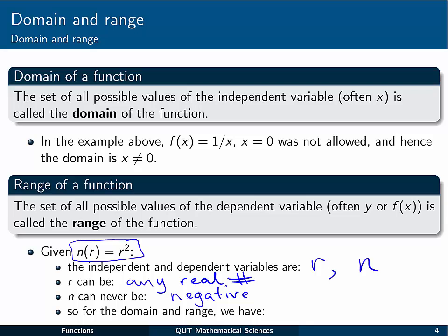So that leaves us for the domain and range. The domain will be minus infinity less than r less than infinity. In other words, any real number. And for the range, if n can never be negative, we might say that 0 is less than or equal to n of r. And that's our domain and range for an example there.